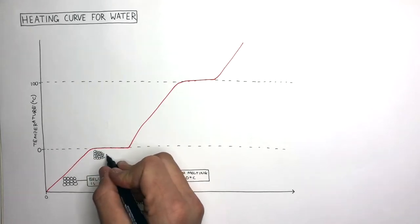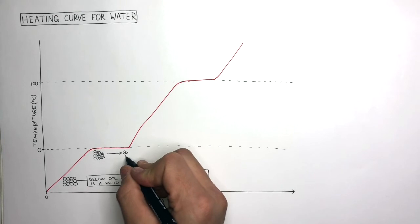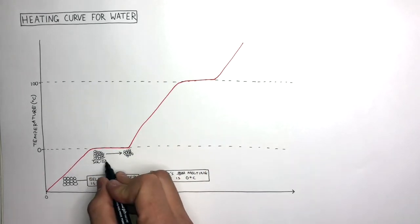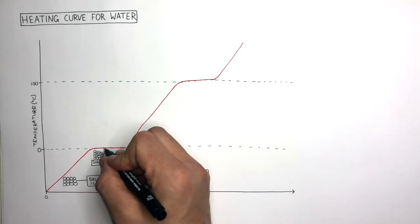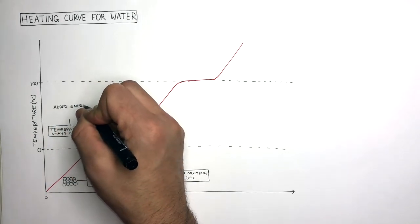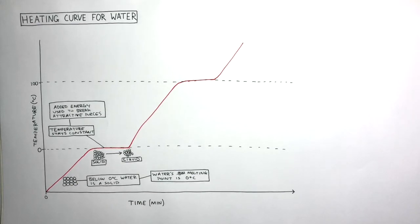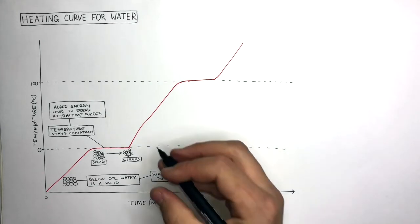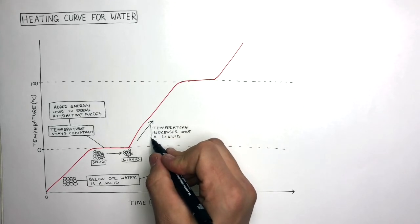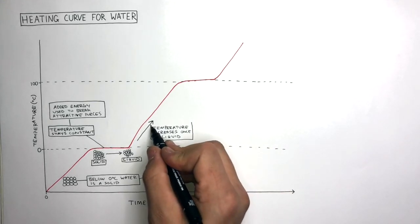The attractive forces start to break, allowing the water molecules to become free and slowly start to move. At the horizontal line, the solid is changing into a liquid. When the ice is melting and changing states, the temperature remains constant. This is because the added energy is used to break the attractive forces. Only once all the attractive forces between the water molecules in the ice have been broken will the added energy allow the temperature of the liquid to start increasing. Any added energy goes into breaking the attractive forces, so the temperature remains constant until the ice has completely melted.